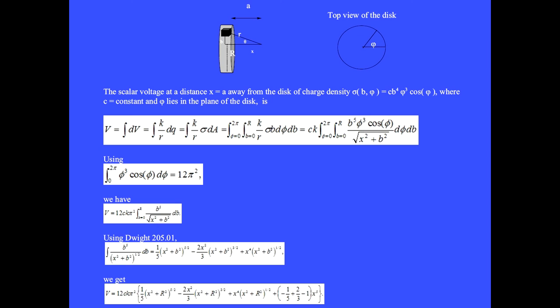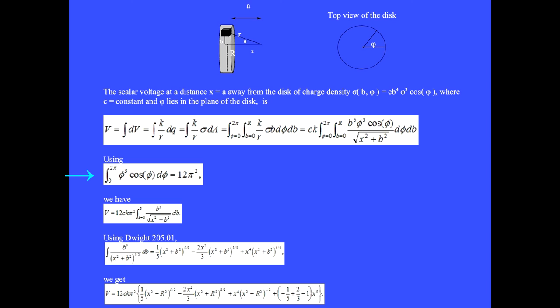We calculate the scalar voltage at distance x equals a from a disk with non-uniform charge density sigma equals constant c times b to the fourth times phi cubed times cosine phi, where phi lies in the plane of the disk. The total voltage due to all the little dQs is found by adding all the little dV's, where dV equals k over r dQ and dQ equals sigma times differential area b dB dPhi. The integration over the phi part gives 12 pi squared, and using the appropriate antiderivative gives the final result for the voltage.